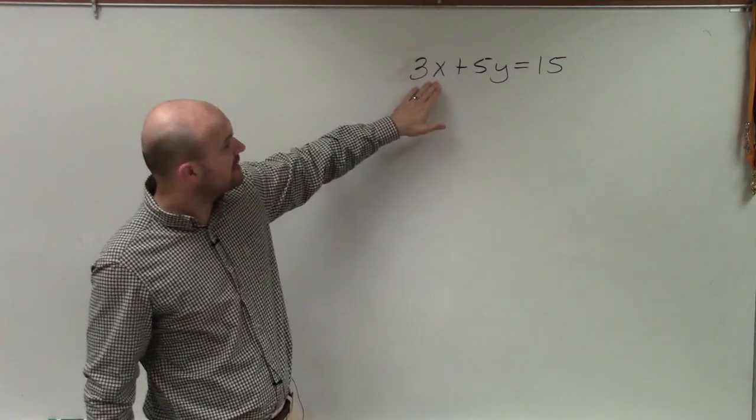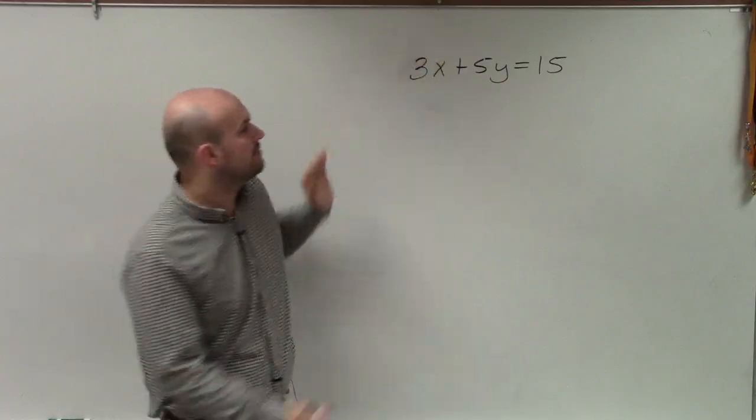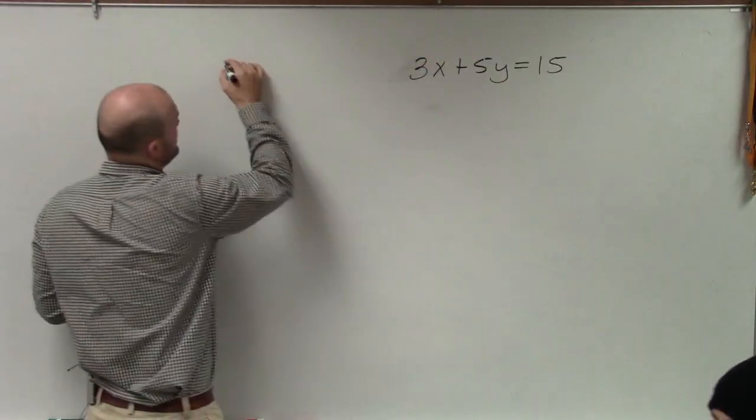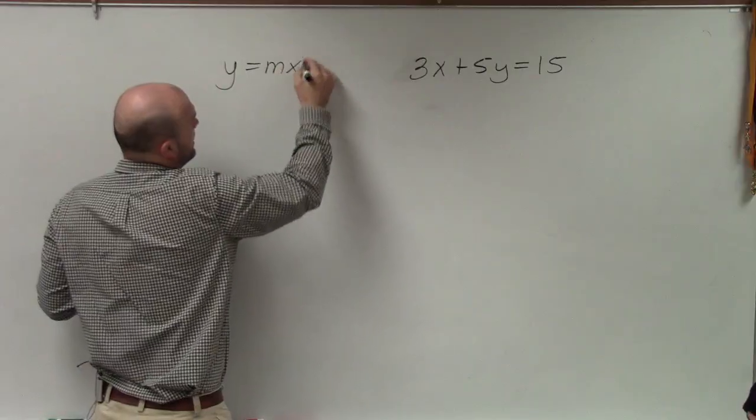So in this case, I have 3x plus 5y equals 15. Previously, ladies and gentlemen, we talked about graphing in slope-intercept form, y equals mx plus b.